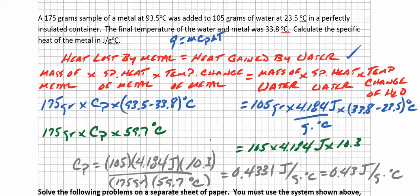Now let's kind of simplify things. 175 grams times specific heat of the metal times 59.7, that's the difference between these two, 93.5 and 33.8, is equal to 105 times the specific heat of the metal times the change in temperature of the, excuse me, the specific heat of the water times the change in temperature of the water.